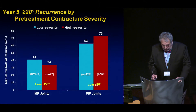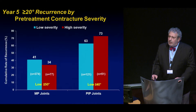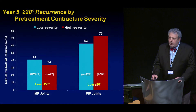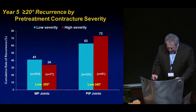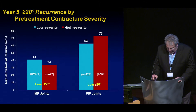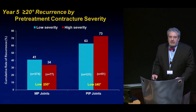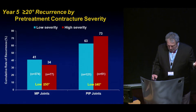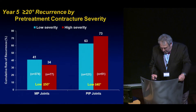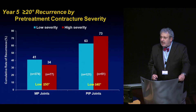Recurrence of 20 degrees or more, looking at pre-treatment contracture severity — MP joints were considered low severity at 50 degrees or less, and PIP joints were low severity at 40 degrees or less. As you can see, the MP joints are counterintuitive; the high severity joints seem to do better. Maybe we need an even larger study. But in the PIP joints, it makes sense that the higher severity joints have a higher recurrence rate later on.